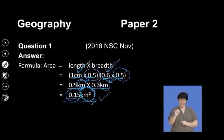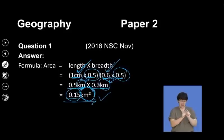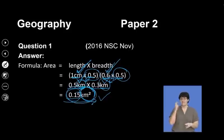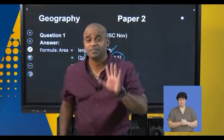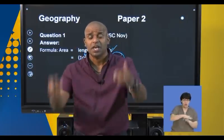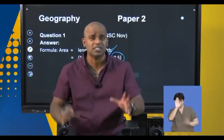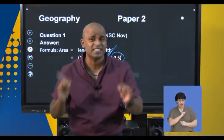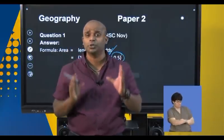Note the marks for area: one mark for the length measurement, one mark for the breadth measurement, one mark for the conversion of the length, one mark for the conversion of the breadth, and your final answer. Area is five marks if you've laid out your responses so that your markers can see exactly what you've put in.